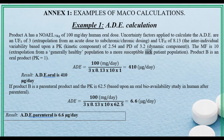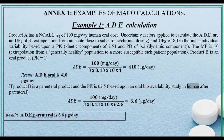Product B is an oral product. PK equals 1. If product B is a parenteral product and the PK is 62.5, this is based upon an oral bioavailability study in humans after parenteral route.